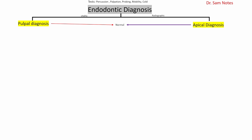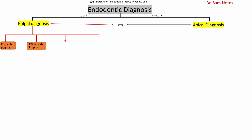Pulpal diagnosis can be further divided into more types. The first type is reversible pulpitis, the second is irreversible pulpitis, the third is necrotic pulp, and the fourth is treatment-based — meaning the tooth has been previously treated or treatment has been initiated.